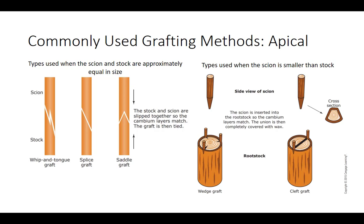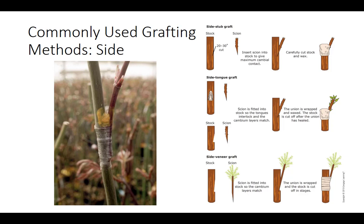Detached scion grafting involves inserting a detached scion into the apex, side, bark, or root of the understock. Detached scion methods include apical, side, bark, and root grafting. There are six types of apical grafting. The whip and tongue, splice, and saddle are used when the scion and stock are approximately equal in size. The cleft and wedge are used when the scion is smaller than the stock. Side grafts place the scion on the side of the rootstock, and side grafting is usually performed at the bench with the rootstock potted and just coming out of dormancy while the scion is dormant. There are three types of side grafting: side stub, side tongue, and side veneer. Side veneer grafting is the most popular way to graft conifers, especially those having a compact or dwarf form.